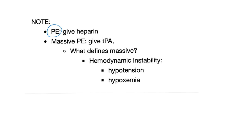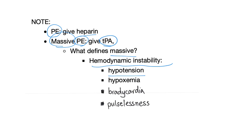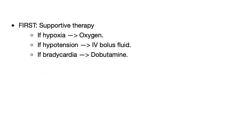If it's pulmonary embolism, give heparin. If it's massive PE or saddle embolism, give TPA. What do we mean by massive? Hemodynamically unstable — hypotension, hypoxemia, severe bradycardia. First, supportive therapy: if there's hypoxia, give oxygen; if there's hypotension, give IV bolus fluid; if there's bradycardia, give dobutamine to make the heart pump stronger.